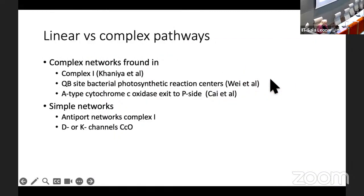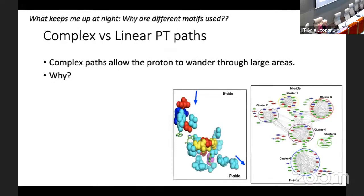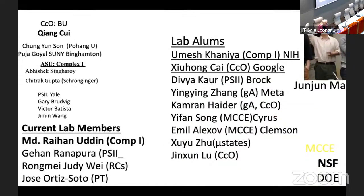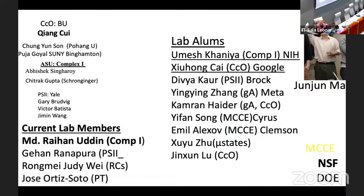To summarize: we have linear versus complicated pathways and networks. We have these proton transfer paths. I want to acknowledge: Changyong Sun and Pujigaworld helped with cytochrome oxidase. Abhisingora and Chitrat Gupta helped with molecular dynamics on complex I. Raihan is working on complex I now. And Junjun Mao has really helped me forever — my first postdoc, still working on coding up MCCE.